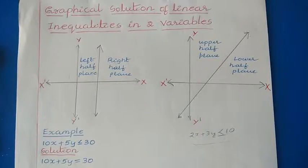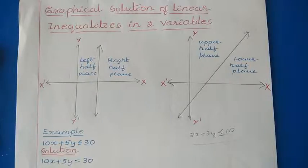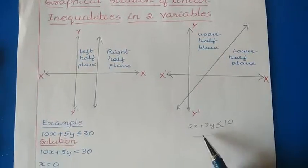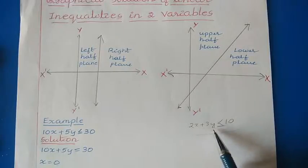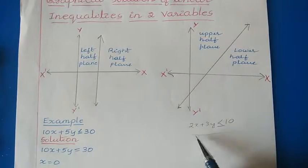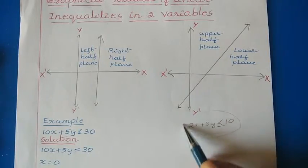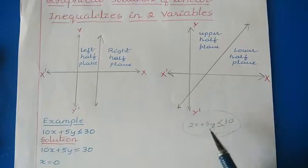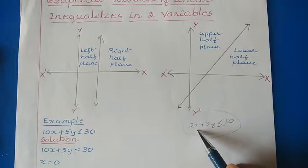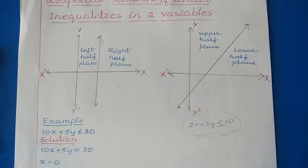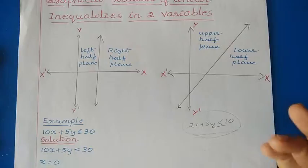In this video I am going to explain the graphical solution of linear inequalities in two variables. Here we have two variables, for example 2x plus 3y less than or equal to 10. This is known as a linear inequality in two variables where we have x as well as y. So now let us see how we can represent this on the graph.